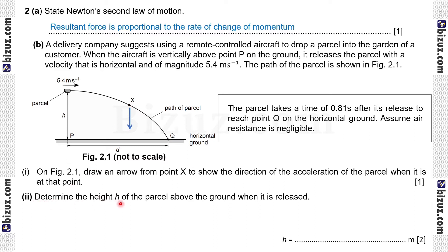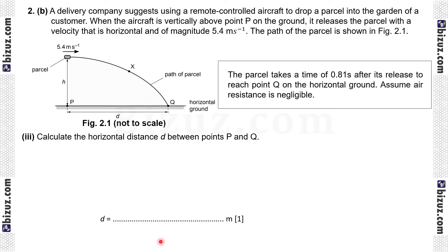B2, determine the height h of the parcel above the ground when it is released. B2 is solved using formula h that is height equal to ut plus half g t square. And here initial vertical velocity is 0. That's why you can write 0 plus half g that is 9.81 and the time 0.81 square. Finally, it is equal to 3.2 meter. Then B3, calculate the horizontal distance d between the points P and Q. Formula for horizontal distance equal to v horizontal multiplied by time. That's why 5.4 is given as horizontal speed and the time is 0.81 second. So finally it is 4.4 meter.